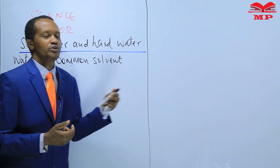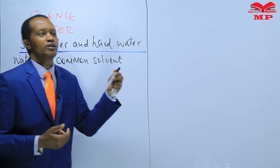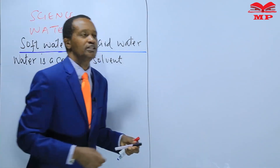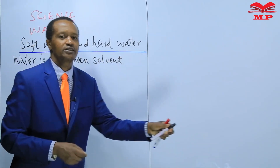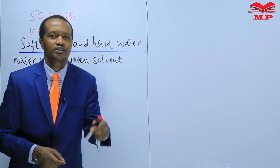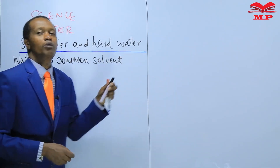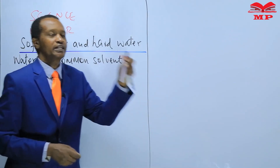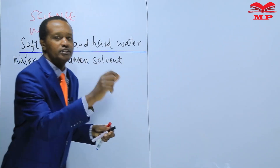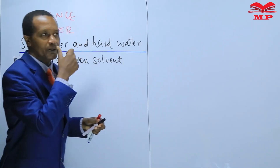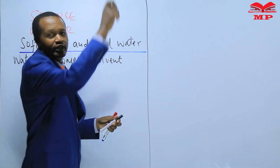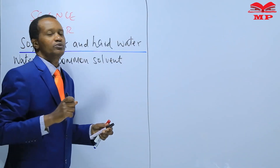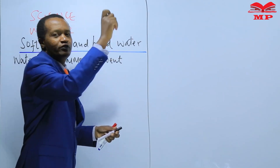This water that we use in our homes can be obtained from various sources such as wells, rivers, boreholes, lakes, ponds, or water that falls in the form of rain — rainfall.